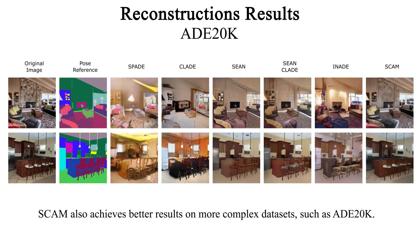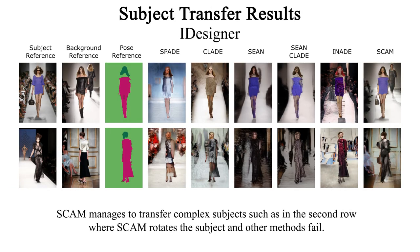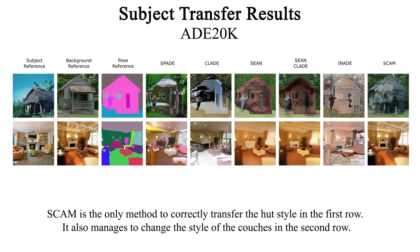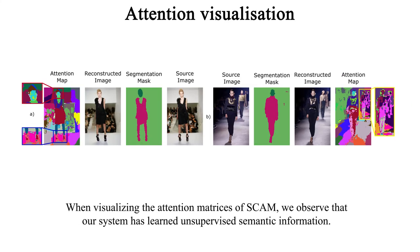SCAM also achieves better results on more complex datasets such as IDEA to Nikkei. SCAM manages to transfer complex subjects, such as in the second row where SCAM rotates the subject and other methods fail. The increased capacity of SCAM allows capturing more complex styles than the previous state of the art, like the hair on the first row. SCAM is the only method to correctly transfer the HUD style in the first row and also manages to change the style of the couches in the second row. When visualizing the attention matrices of SCAM, we observe that our system has learned unsupervised semantic information.